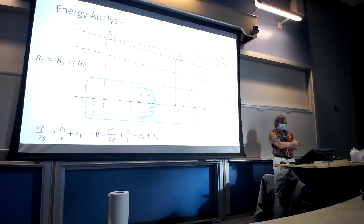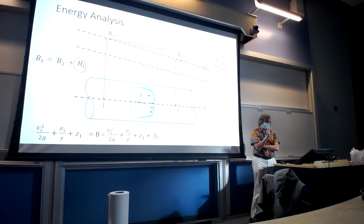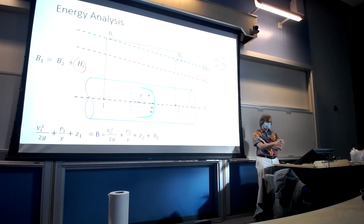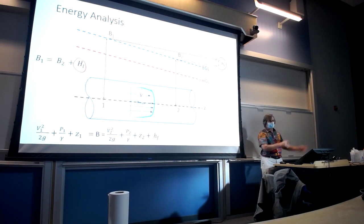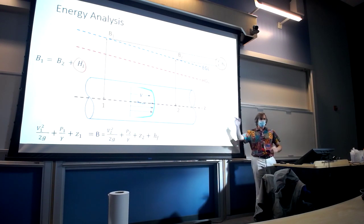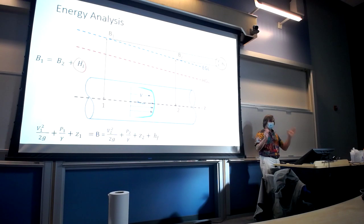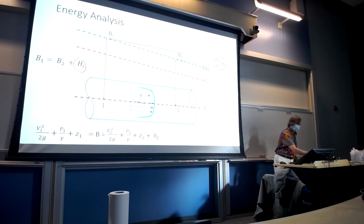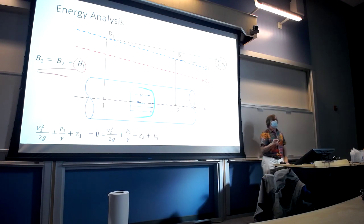Basically, we're doing an energy balance in our pipeline. This is a very simplistic system. The energy analysis can be in any complex system — changes in elevation, going from a tank to a pipe to a jet to a contraction. As long as you can draw the path line and identify two points on it, you can perform an energy balance, where the upstream energy is always greater than the downstream energy.